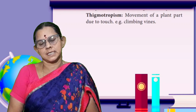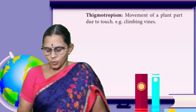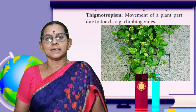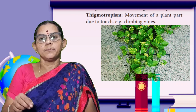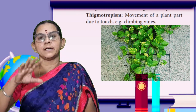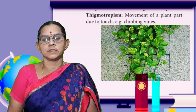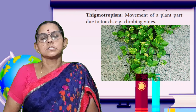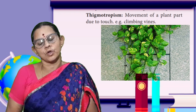Thigmotropism is the movement of a plant in response to touch or support. There are many plants that need support — a small climbing plant will grow and wrap around a support. Growth based on the stimulus of support is called thigmotropism.